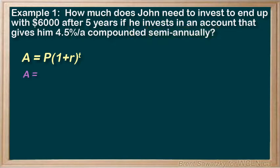A equals the amount at the end of the loan. In this question, we end up with $6,000, so A must be $6,000. P is our unknown in this case. We don't know the principle, or our original investment.